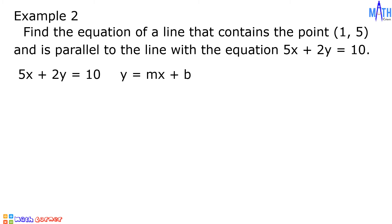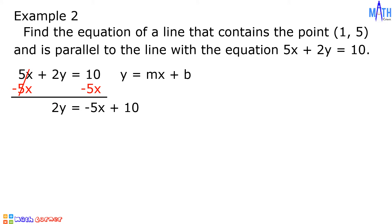Let us add -5x on both sides of the equation. Since 5x + (-5x) = 0, then we have 2y on the left side. On the right side, we have -5x + 10. Next, let us divide both sides by 2. 2y ÷ 2 = y. -5x ÷ 2 = -5x/2, and 10 ÷ 2 = 5. And we have y = -5x/2 + 5.